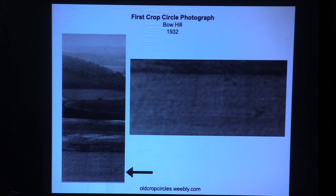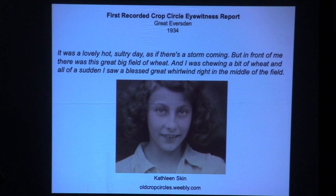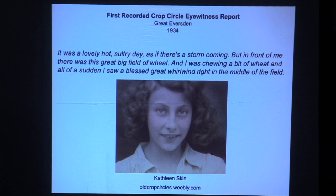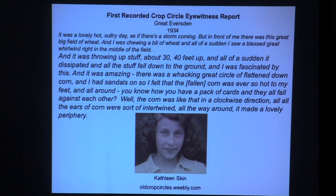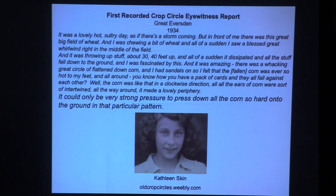Here's the first photograph, 1932. The first eyewitness report describes a lovely hot sultry day. All of a sudden, there was a great big whirlwind right in the middle of the field, throwing up stuff about 30 to 40 feet up. It dissipated and the stuff fell down. There was a whacking great circle of flattened corn, and the fallen corn was ever so hot to the feet. The corn was like a pack of cards all fallen against each other, in a clockwise direction, all the ears intertwined all the way around — it could only be very strong pressure to press down the corn so hard into the ground in that particular pattern.